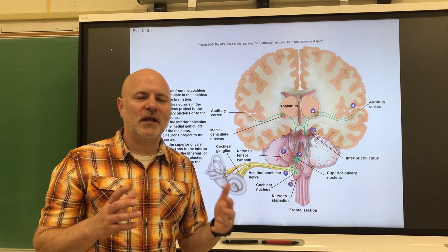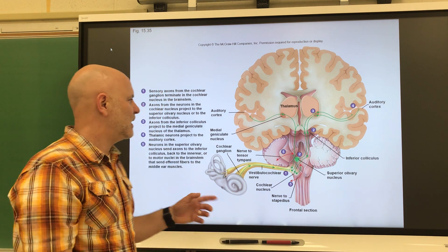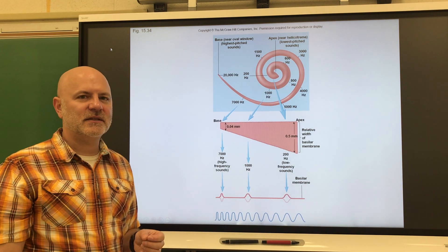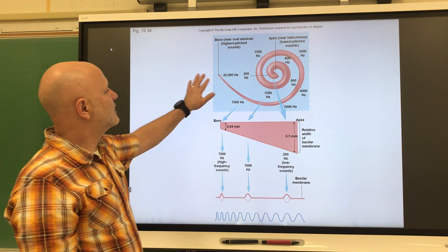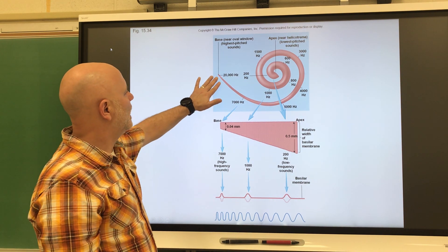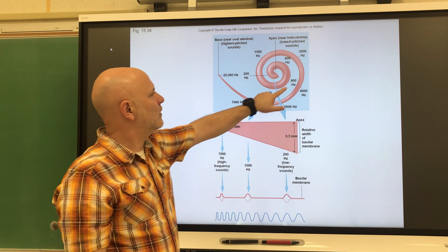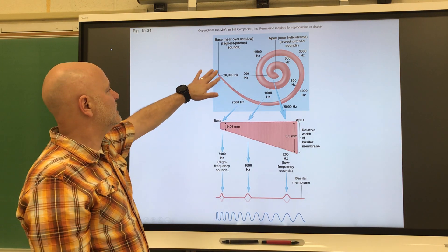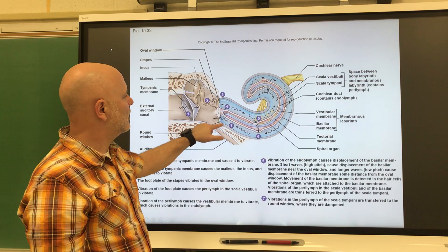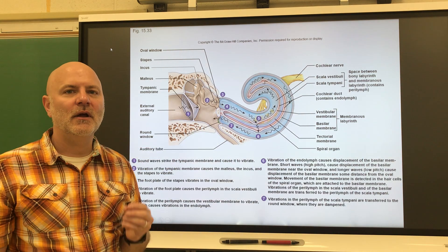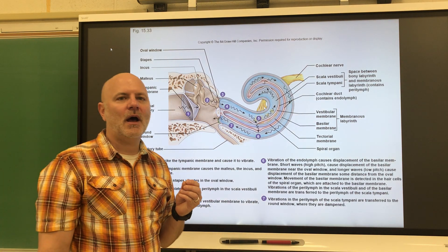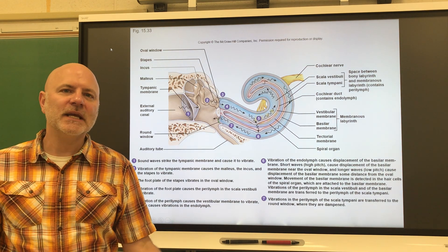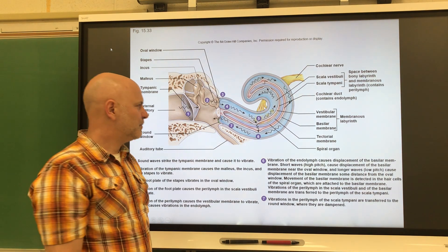Different sounds give us different vibrations, which trigger different hair cells — that's what makes us hear different sounds. Higher notes are sensed at the beginning of the cochlea, and lower notes are sensed further in. Because the hair cells for higher notes are vibrated so often, those are the ones we tend to lose more easily than those for lower notes.